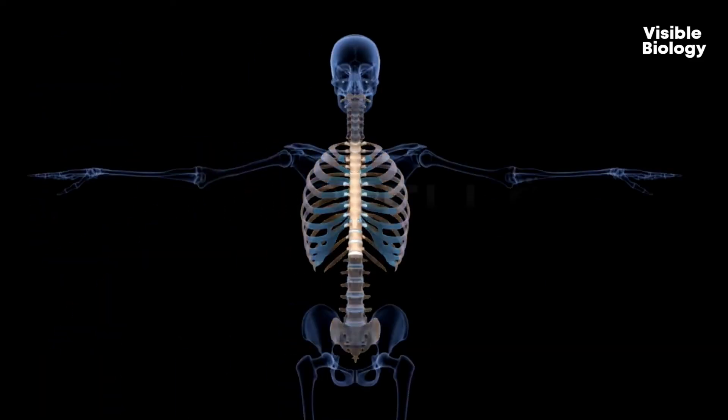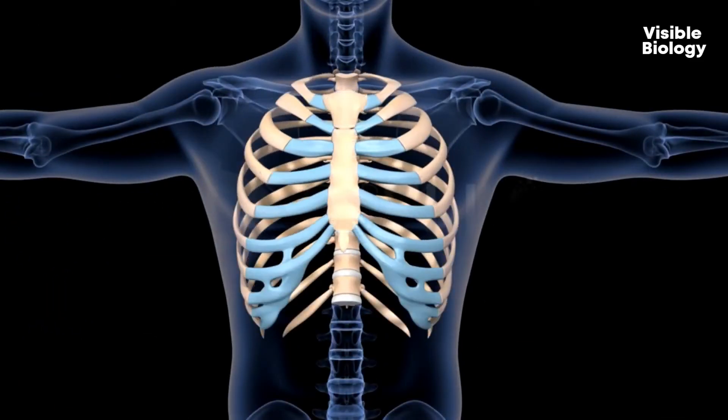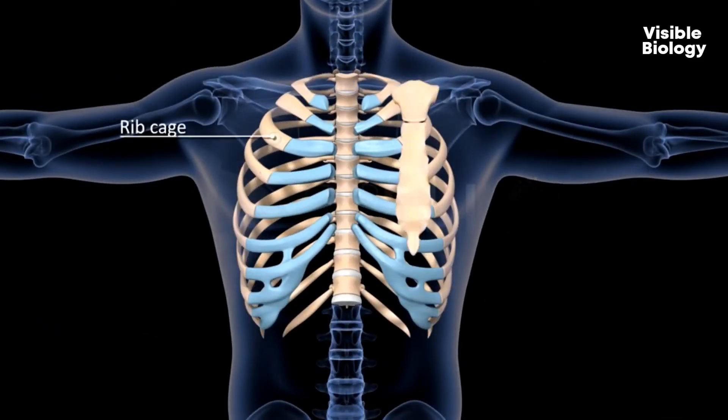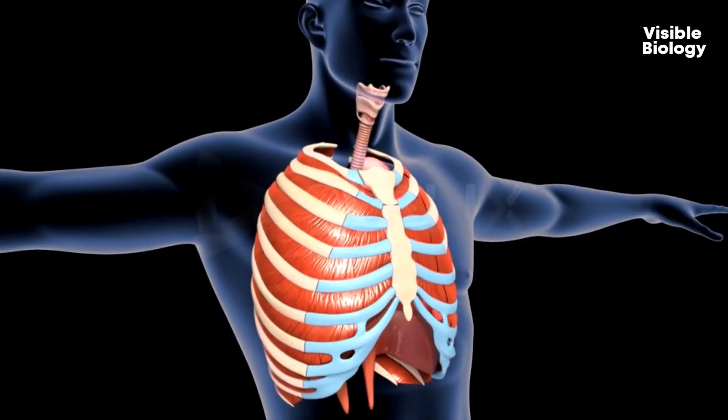Going to the ribcage — the ribcage is also known as the thoracic cage, which is made up of features that protect your lungs and your heart.